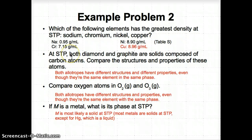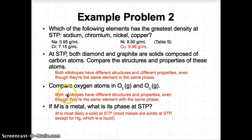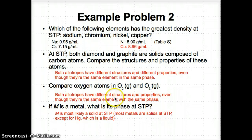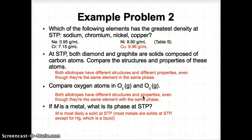For problem two, at STP, both diamond and graphite are solids made of carbon atoms. Both are allotropes of carbon — they have different structures and therefore different properties, even though they're the same element in the same phase. For question three, O₂ and O₃ are both allotropes of oxygen in the gas phase; they have the same element and same phase but different structures, resulting in different properties.